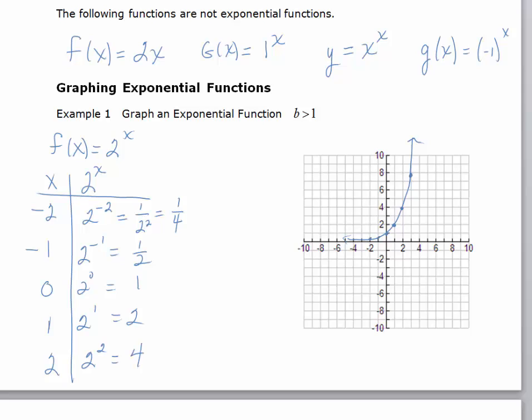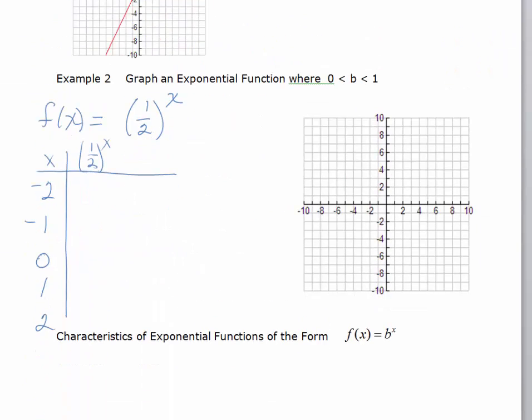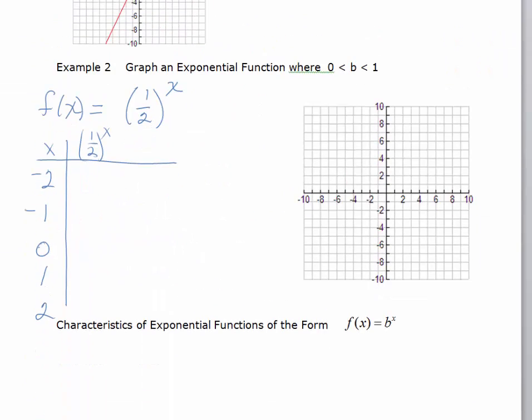Alright, so now let's graph an exponential function where the base is less than 1. This is a case where the base is between 0 and 1. And we're going to graph f(x) equals 1 half to the x. And so, we'll take 1 half and raise it to the negative 2. Now, that's the equivalent of flipping over, or taking the reciprocal of, and changing the exponent to positive, or just basically 2 squared, which is 4.